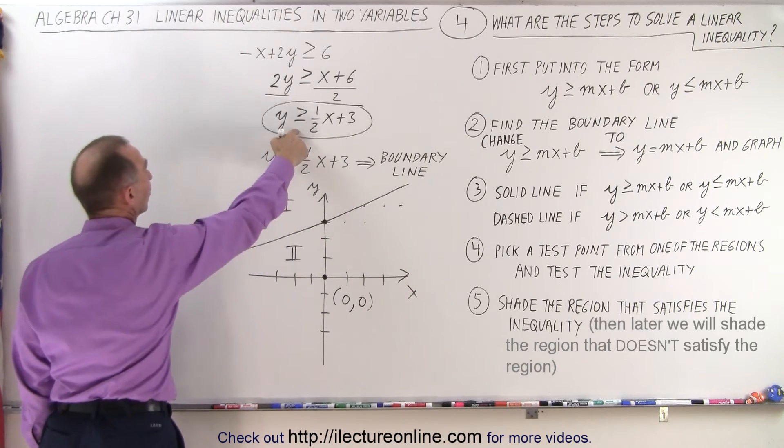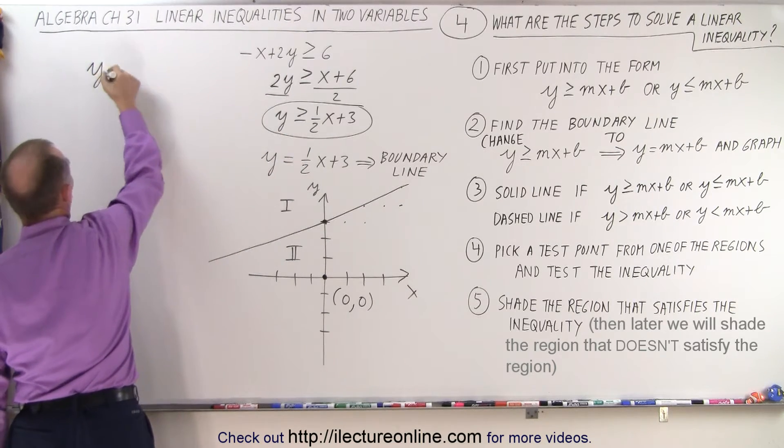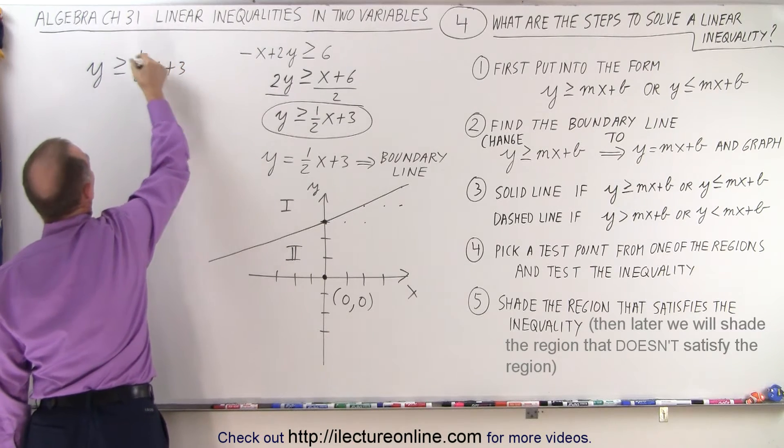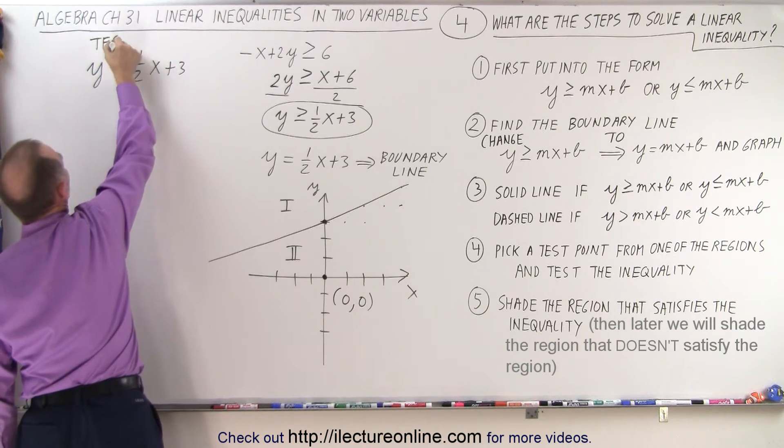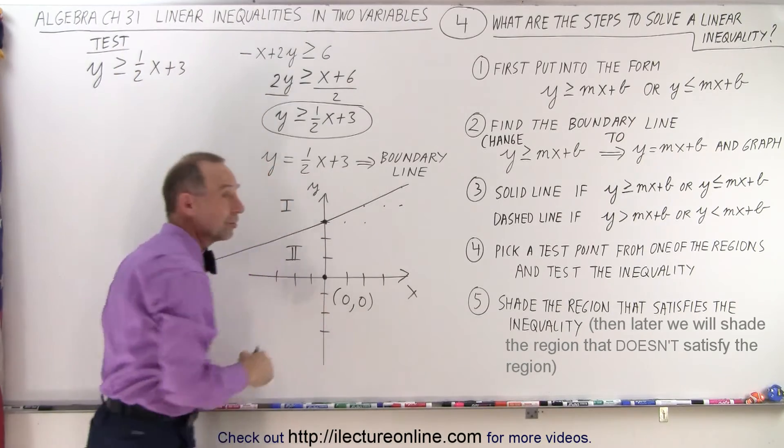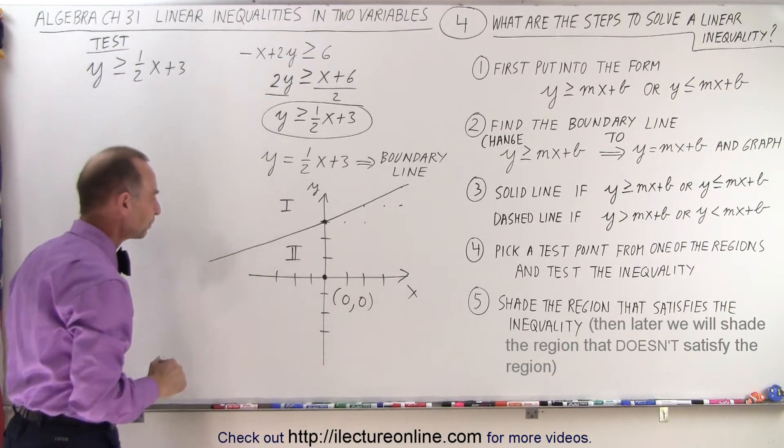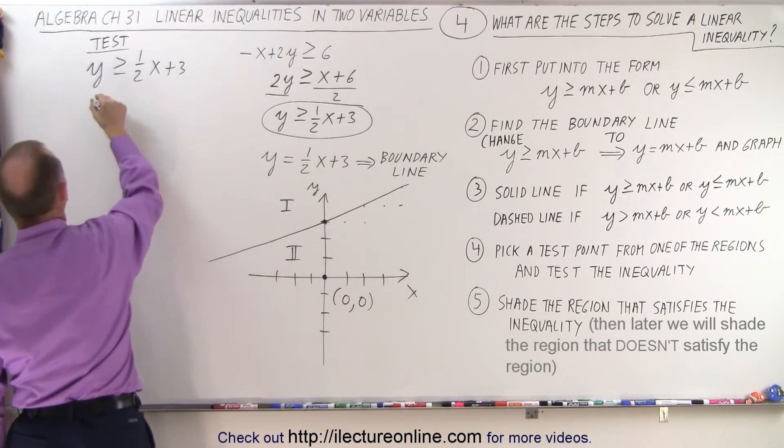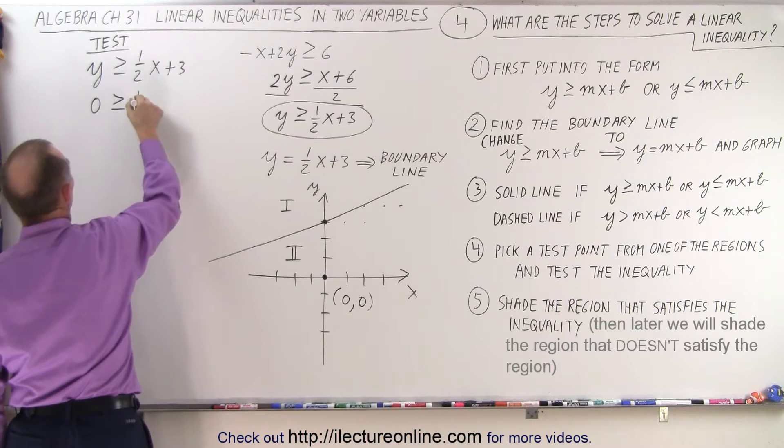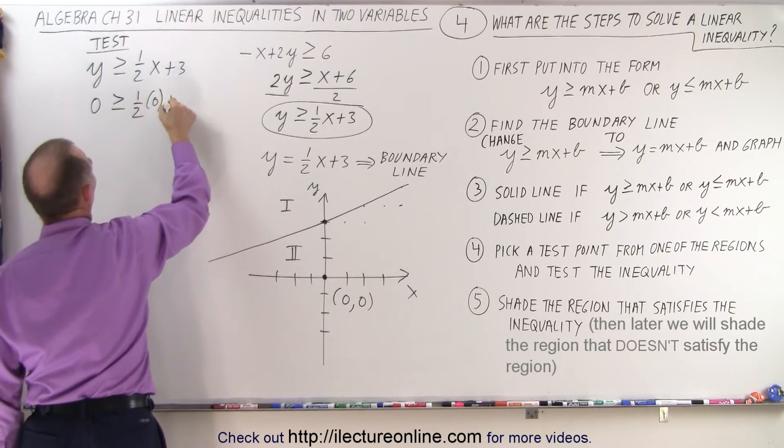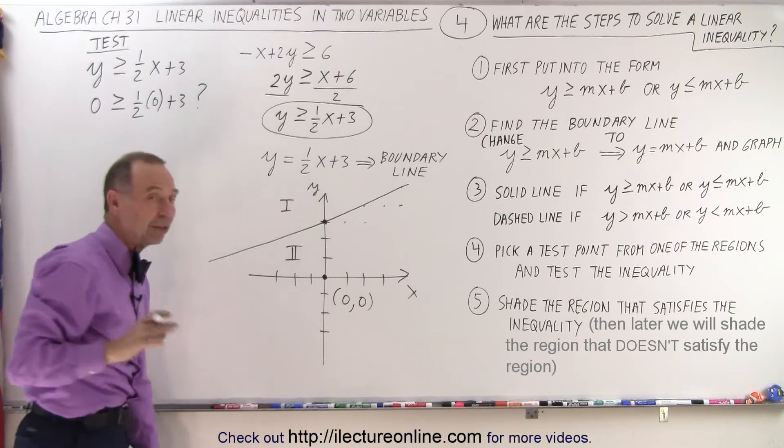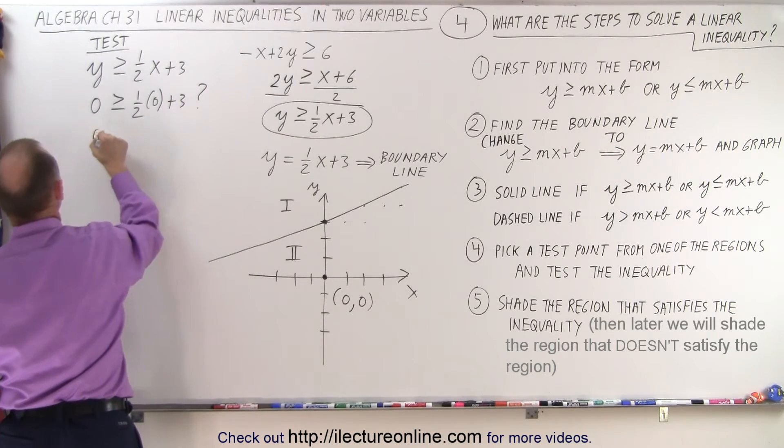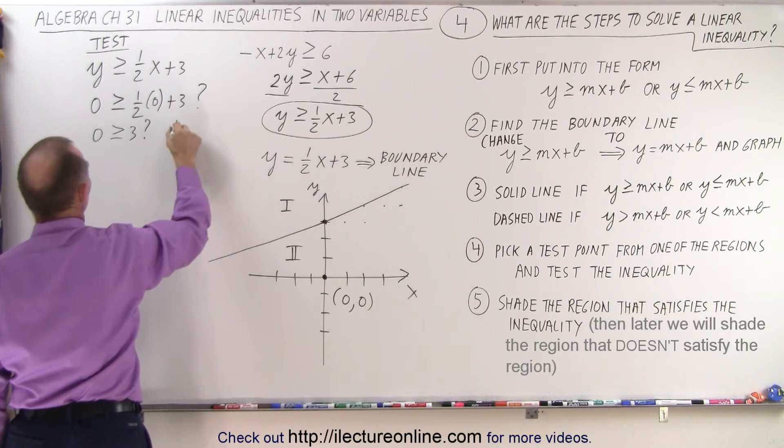So we take our expression right here, y is greater than or equal to 1 half x plus 3, and we're going to test to see if the point that we picked lies in the region that satisfies inequality. So we're going to replace x and y by 0 and 0. So we have 0 greater than or equal to 1 half times 0 plus 3, because we don't know if that's true, we're just testing it. And notice if we simplify that, is 0 greater than or equal to 3? And of course the answer is no.